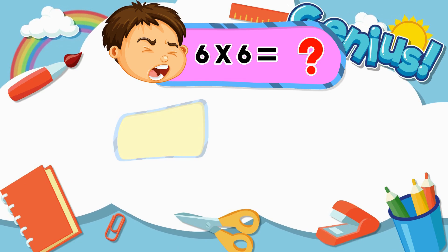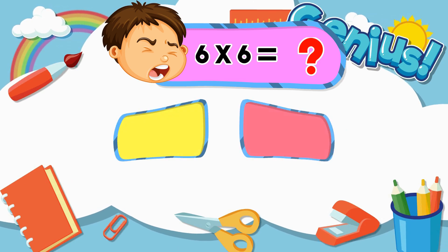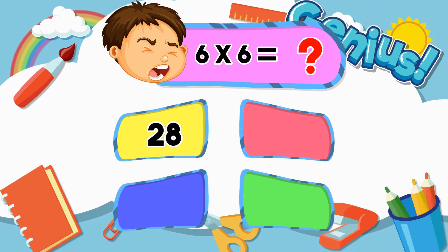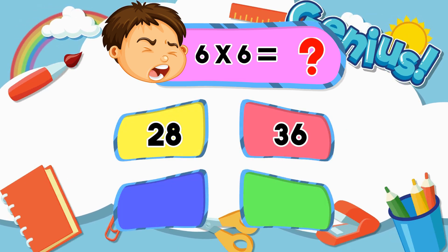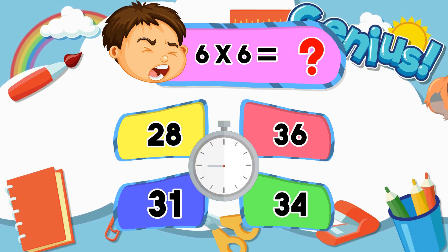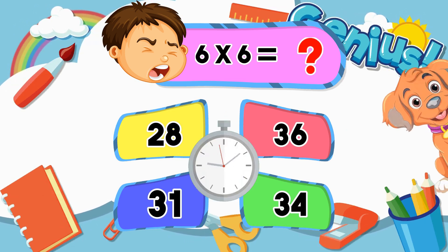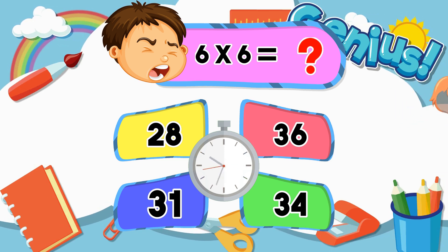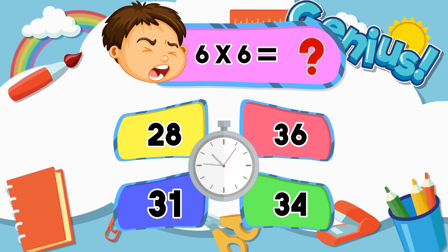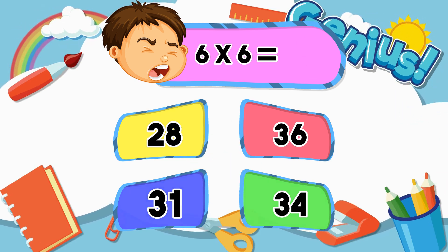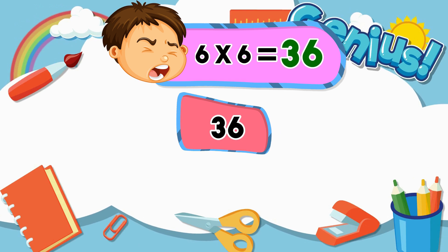What is six times six? Twenty-eight, thirty-six, thirty-one, thirty-four. Thirty-six.